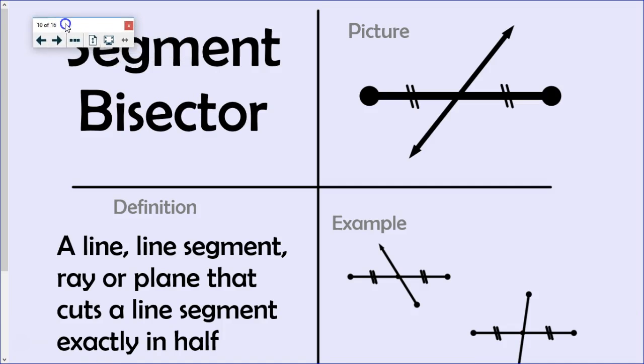A segment bisector. Think about a bicycle. How many tires does it have? It has two. Likewise, a segment bisector divides a segment into two pieces that have the same length. The definition: it's a line, line segment, ray, or plane that cuts a line segment exactly in half.